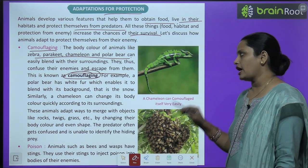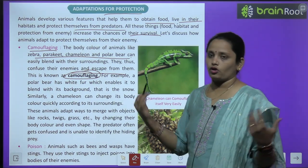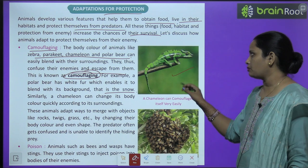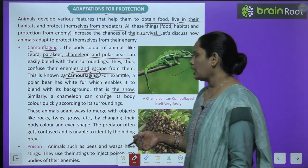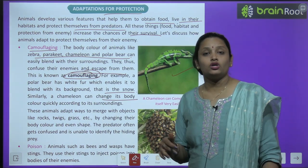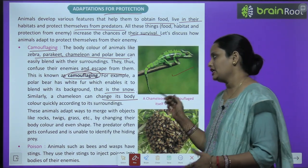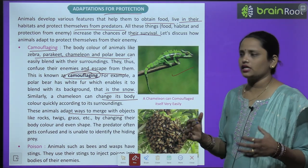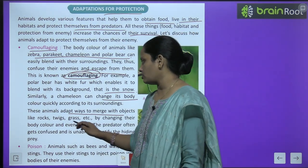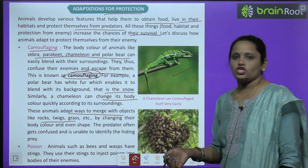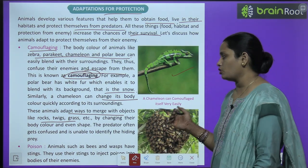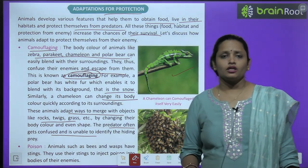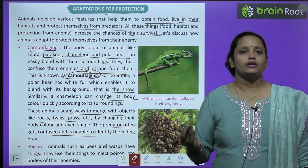For example, a polar bear has white fur which helps it hide against its snowy background. A chameleon can change its body color quickly according to its surroundings. These animals adapt by merging with objects like twigs and grass by changing their color and even their shape, so predators get confused and are unable to identify the hiding prey.